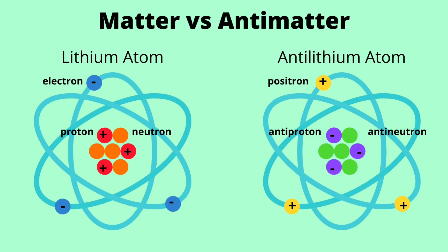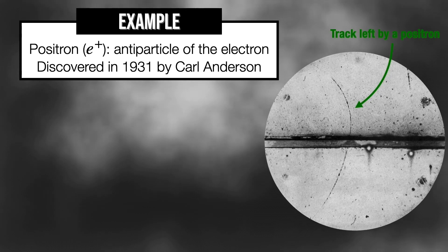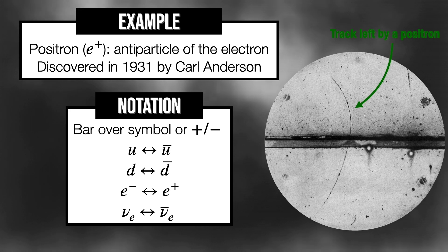But let's not get ahead of ourselves. Here's an example, the positron. This is the antiparticle of the electron, otherwise known as the anti-electron. It was first discovered in 1931 by Carl Anderson.